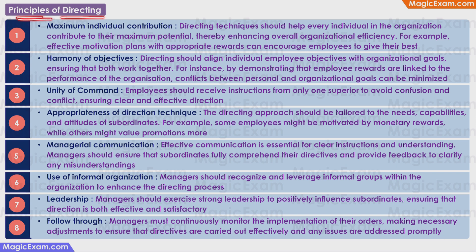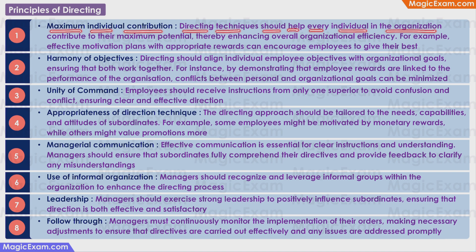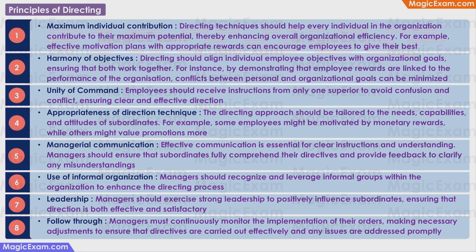What are the principles of directing? These eight points are fundamental aspects managers should be aware of and follow in the process of directing. Maximum individual contribution means the directing techniques should help every individual in the organization contribute to their maximum potential, thereby enhancing overall organizational efficiency. For example, effective motivation plans with appropriate rewards can encourage employees to give their best. Harmony of objectives means that directing should align individual employee objectives with organizational goals. By demonstrating that employee rewards are linked to organizational performance, conflicts between personal and organizational goals can be minimized.